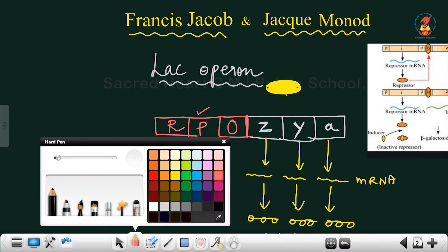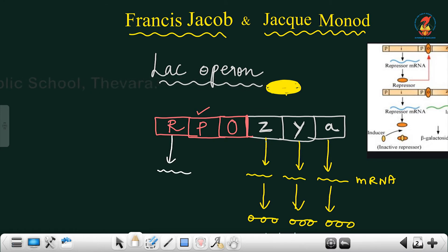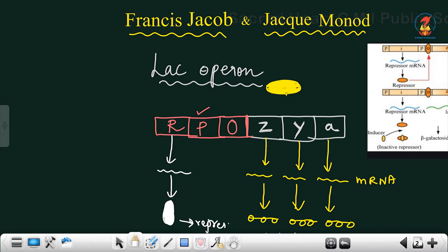Following the promoter, we have another gene — the regulator gene. So the three genes associated with the structural genes are the regulator gene, promoter gene, and operator gene. The regulator gene is also expressed: it undergoes transcription and then translation, and the product is called a repressor — the regulator gene expresses to form a protein called repressor.